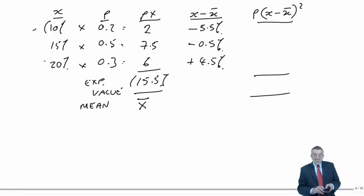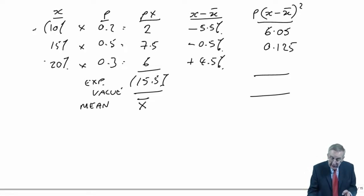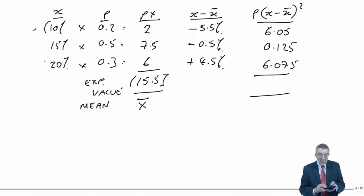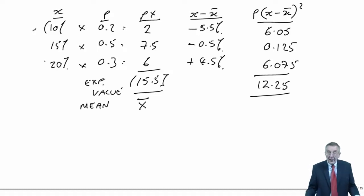So if I can find my calculator, here we are, check me, but 5.5 squared, multiplied by the probability, because we're taking the weighted average, 0.2, I get 6.05. Next 0.5 squared, multiplied by the probability, 0.5, gives me 0.125. And finally, 4.5 squared, times 0.3, is 6.075. They're all positive, minus times minus is a plus, so what's the total of those? It's 12.25, that's the weighted average, expected value, the weighted average of the squares of the differences away from the mean.